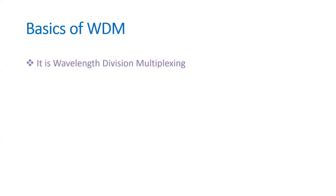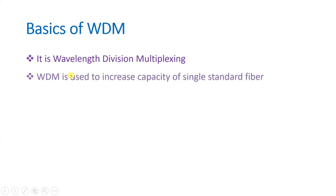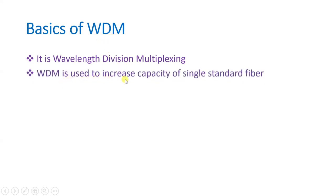WDM is Wavelength Division Multiplexing, where multiplexing is done based on wavelength. The network is based on Optical Fiber, and in that we send light signals. Light signals are multiplexed with respect to wavelength in a WDM network. WDM is used to increase the capacity of a single standard fiber, which can operate with some modes on its own.